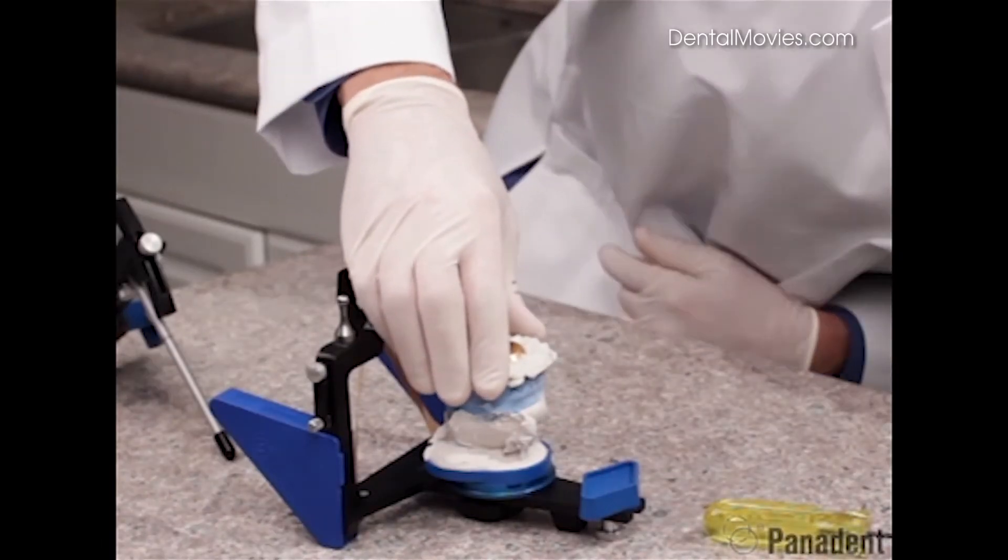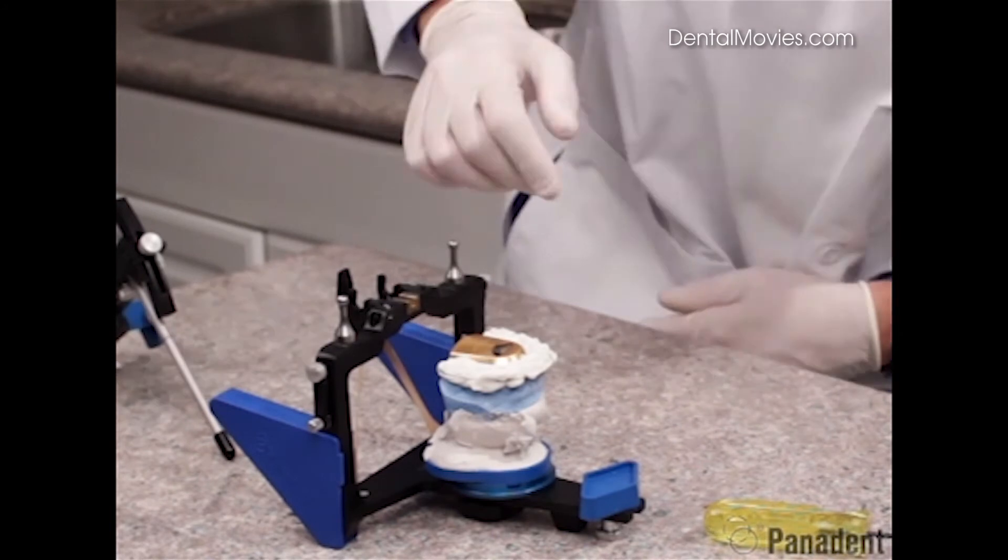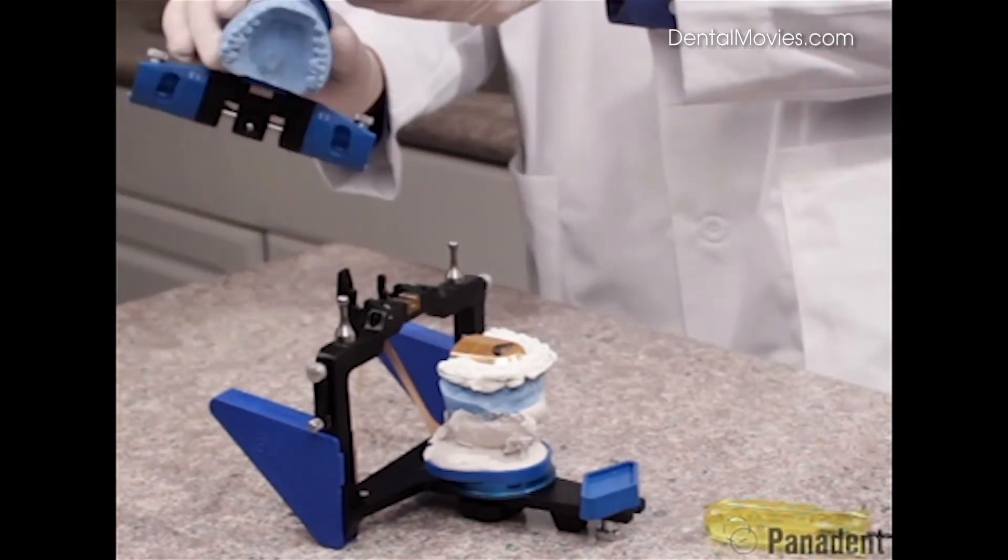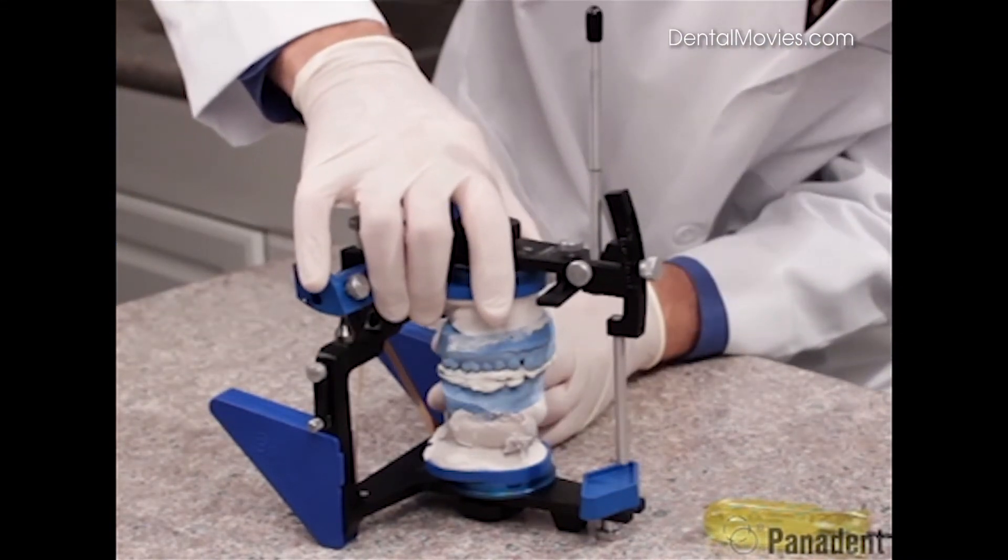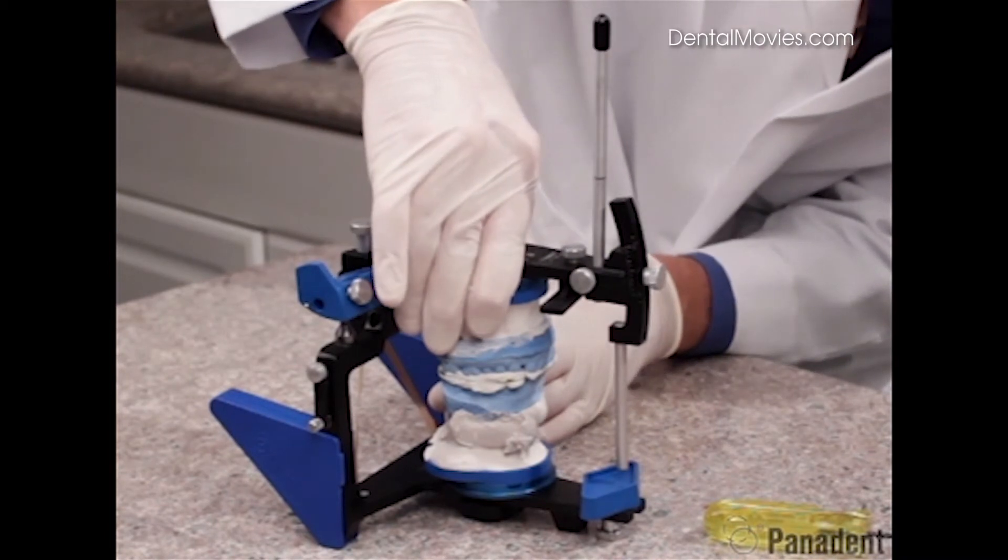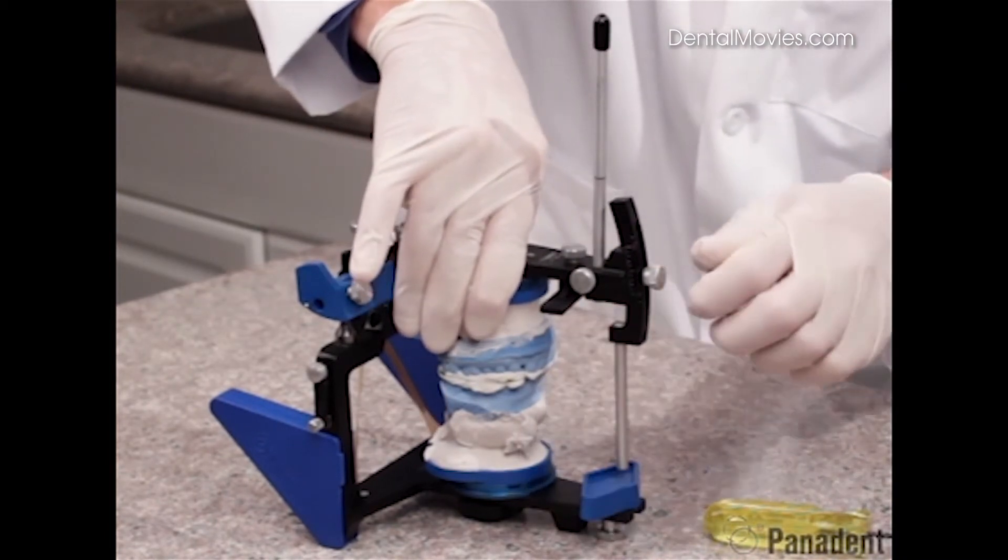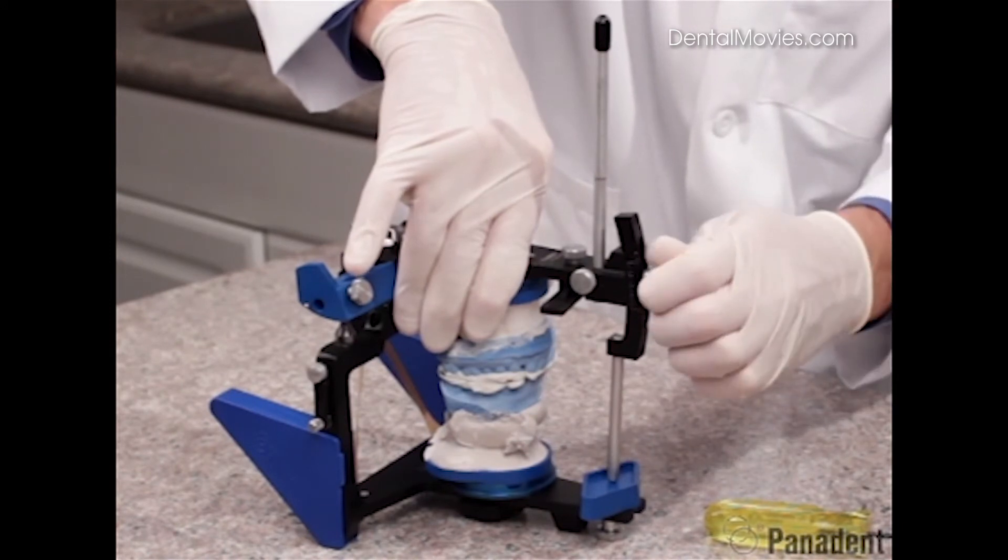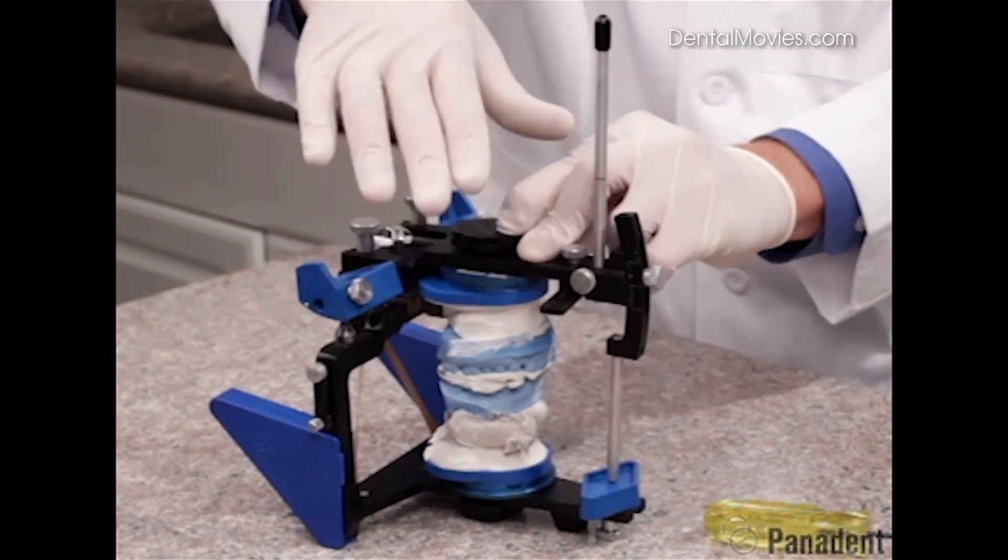So we now set our protrusive check bite into our lower cast. And then we can bring our upper frame around and set our upper cast into the protrusive check bite and push firmly down in the center here. And then we can loosen the incisal pin, dropping that down to create a bigger tripod for better stabilization.